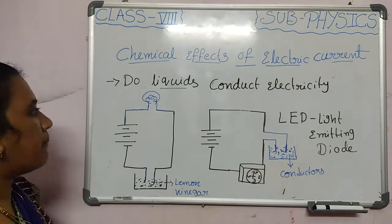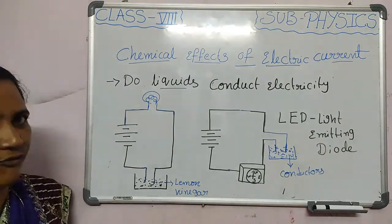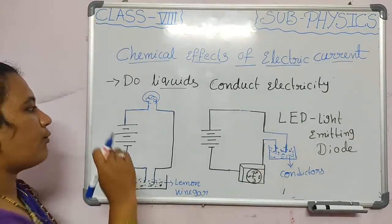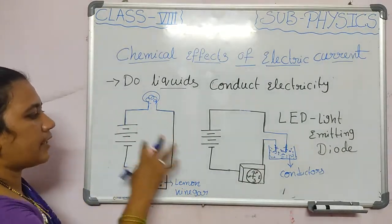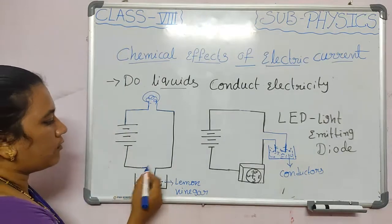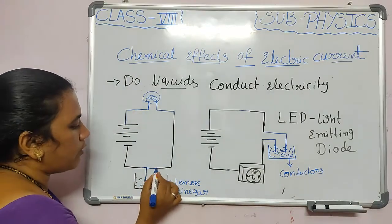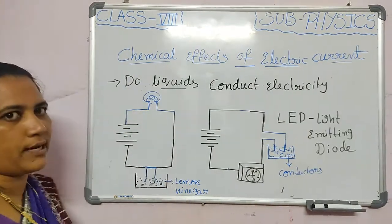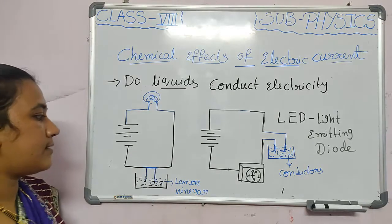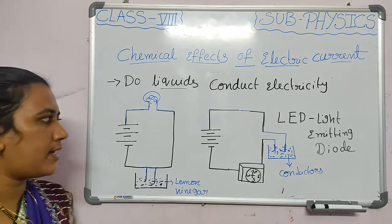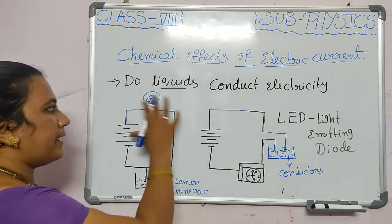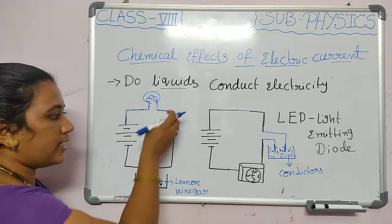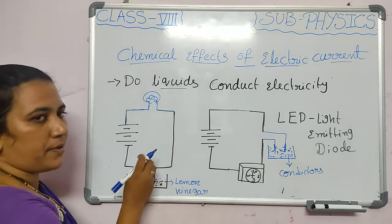The battery is a source of electrons. When we consider the circuit — is it a closed circuit or an open circuit? This is a closed circuit because the circuit is completely closed with no gap.